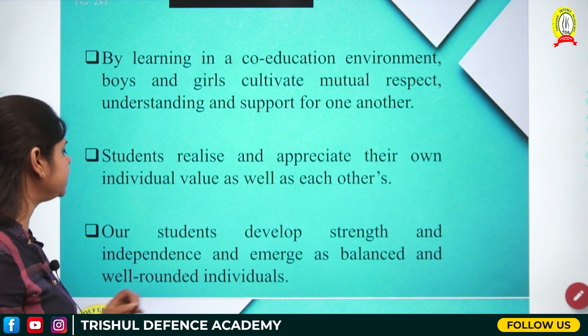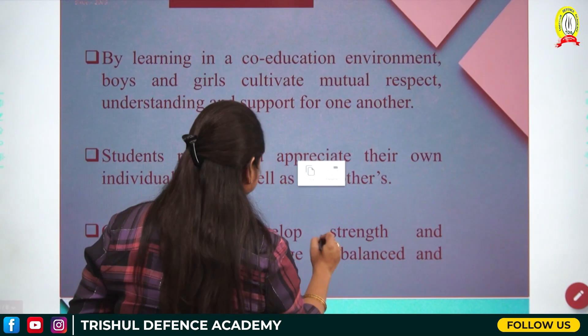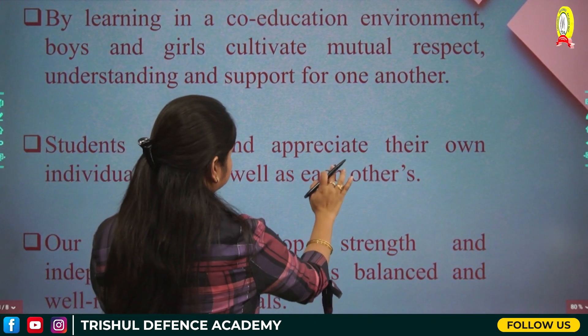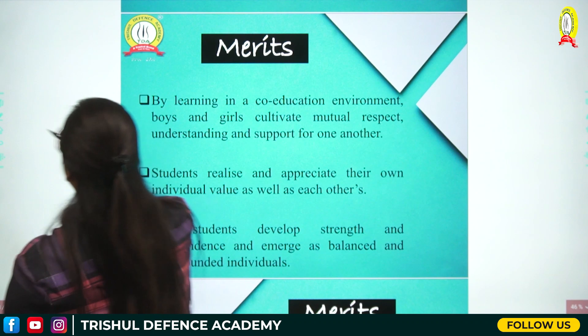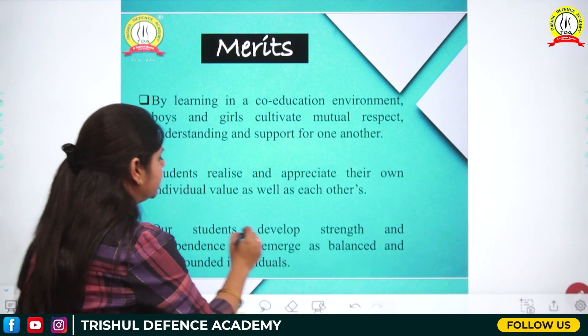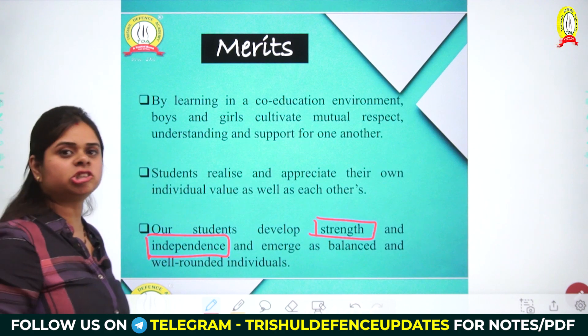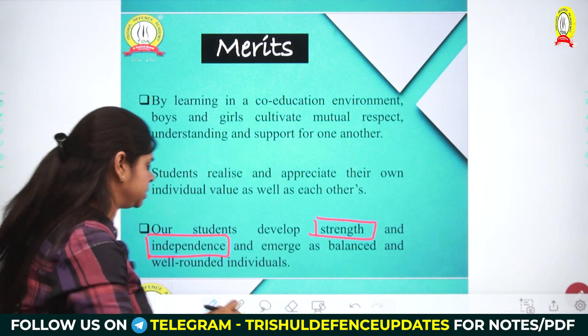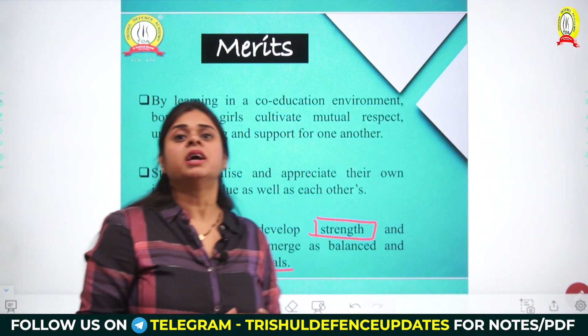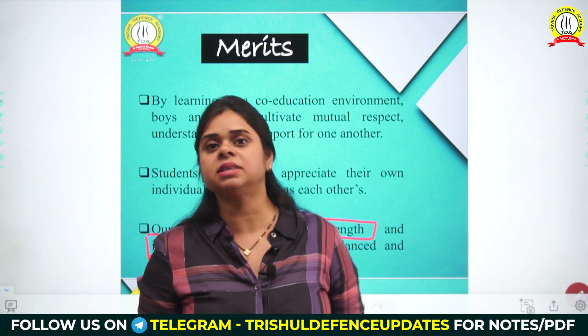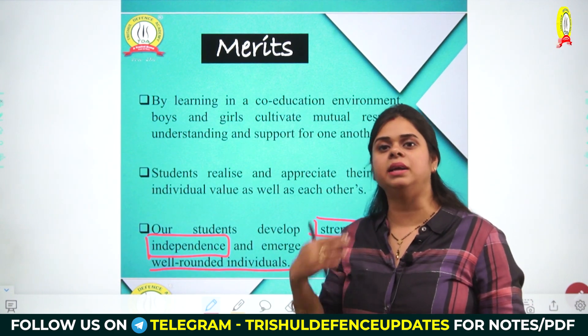Students develop strength and independence and emerge as balanced and well-rounded individuals. 'Well-rounded individuals' means developing a complete personality. This happens because of the co-education environment — since students are dealing with both genders, they can easily open up, and well-rounded individuals emerge because of co-education.